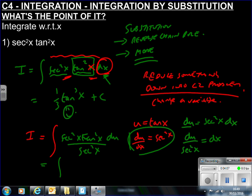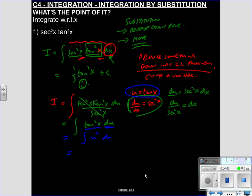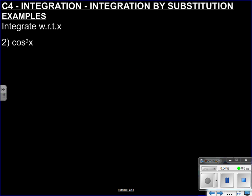Can you see what's happened? The sec squared cancels — that's why you change the dx first: see what cancels, then see what you're left with. So I've got tan squared x du, but I can't integrate because the variables are different. I need this in terms of u. But u is tan x, so I'm integrating u squared du — now it's a C1 problem. u squared integrates to a third u cubed plus c. We didn't start with u's, so we don't finish with u's: the answer is a third tan cubed x plus c.